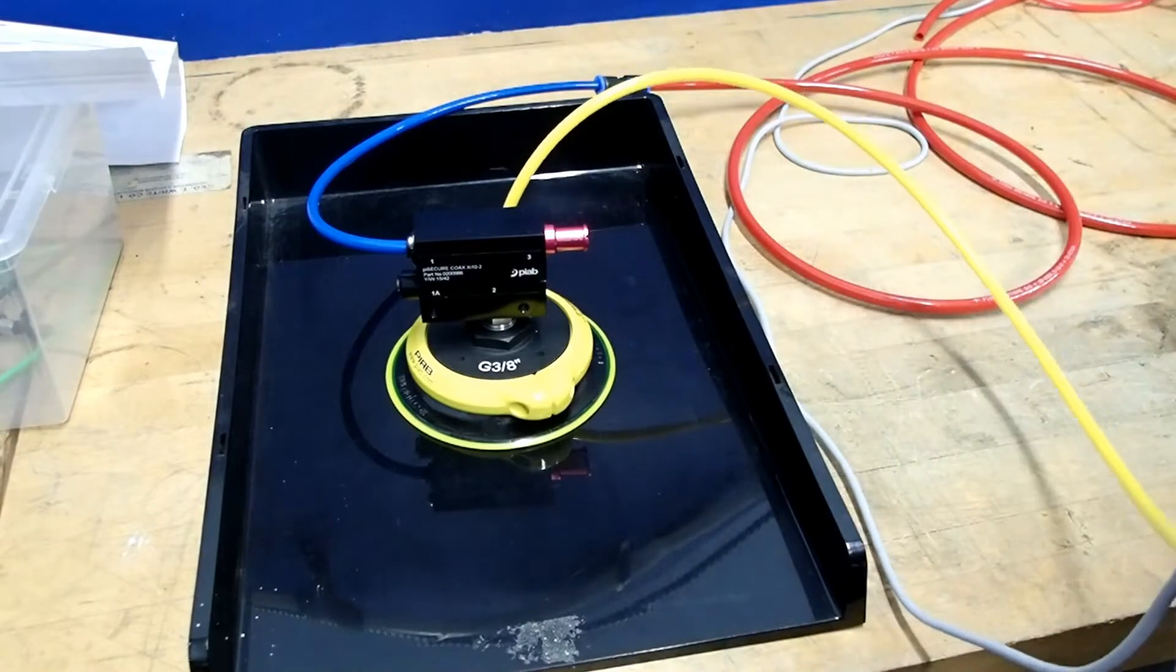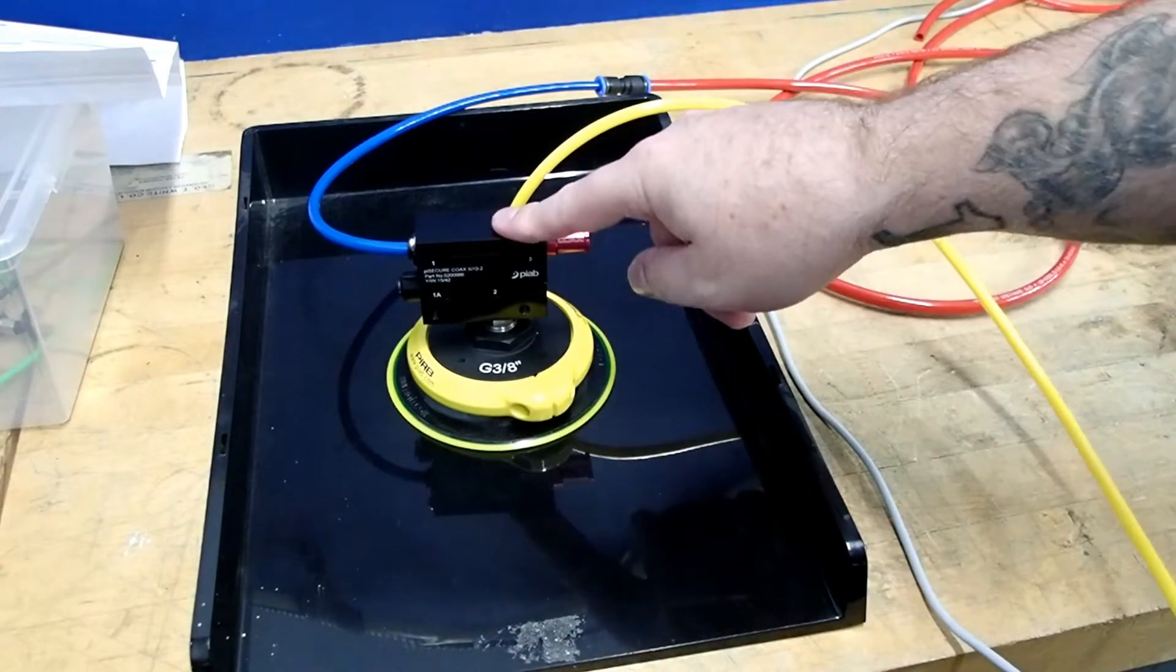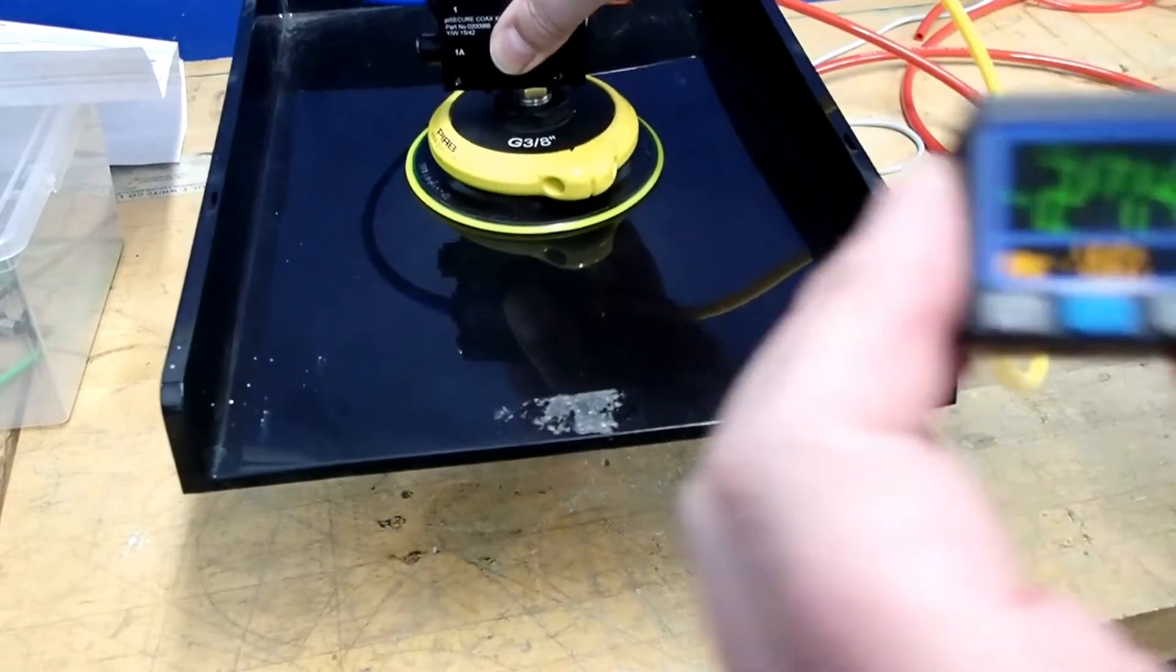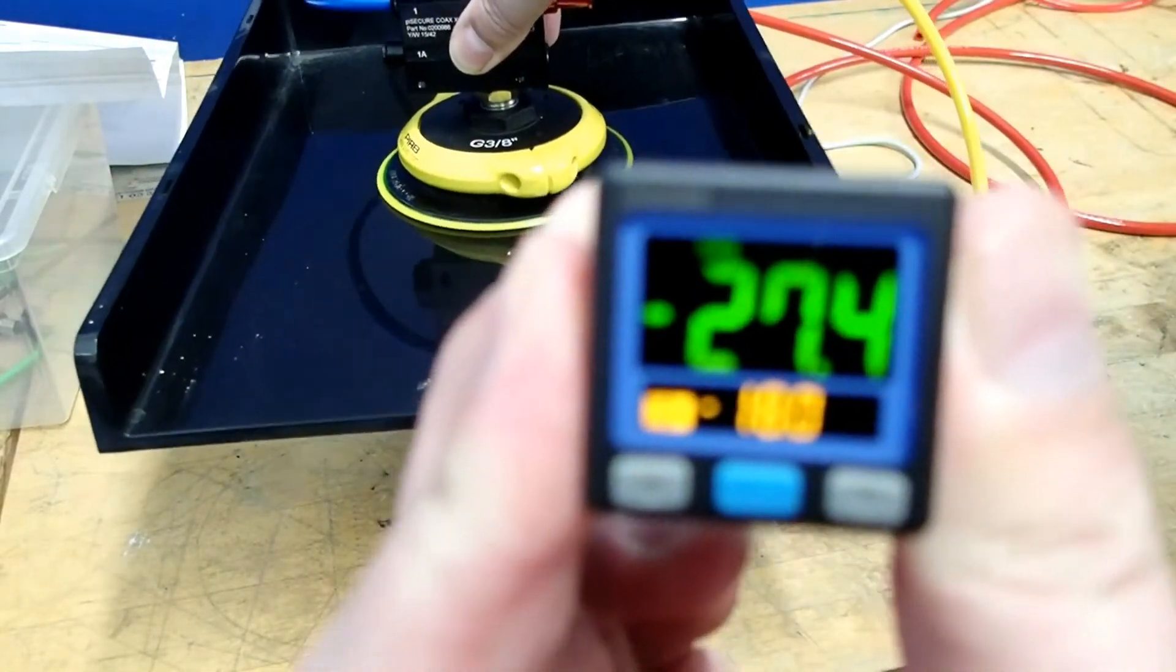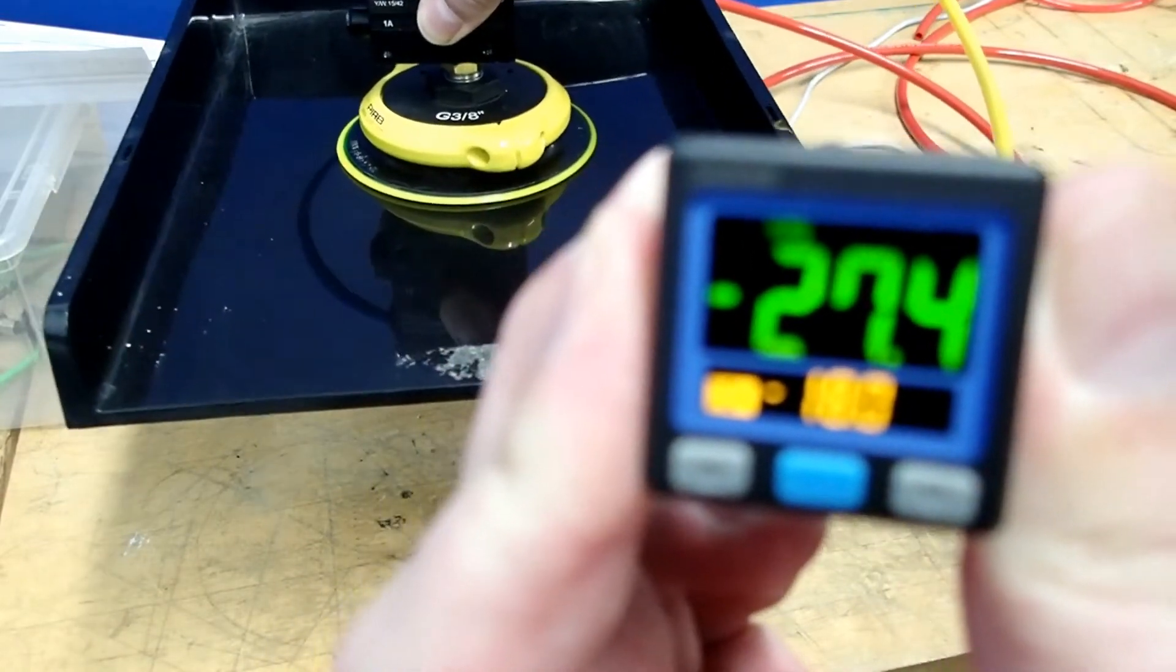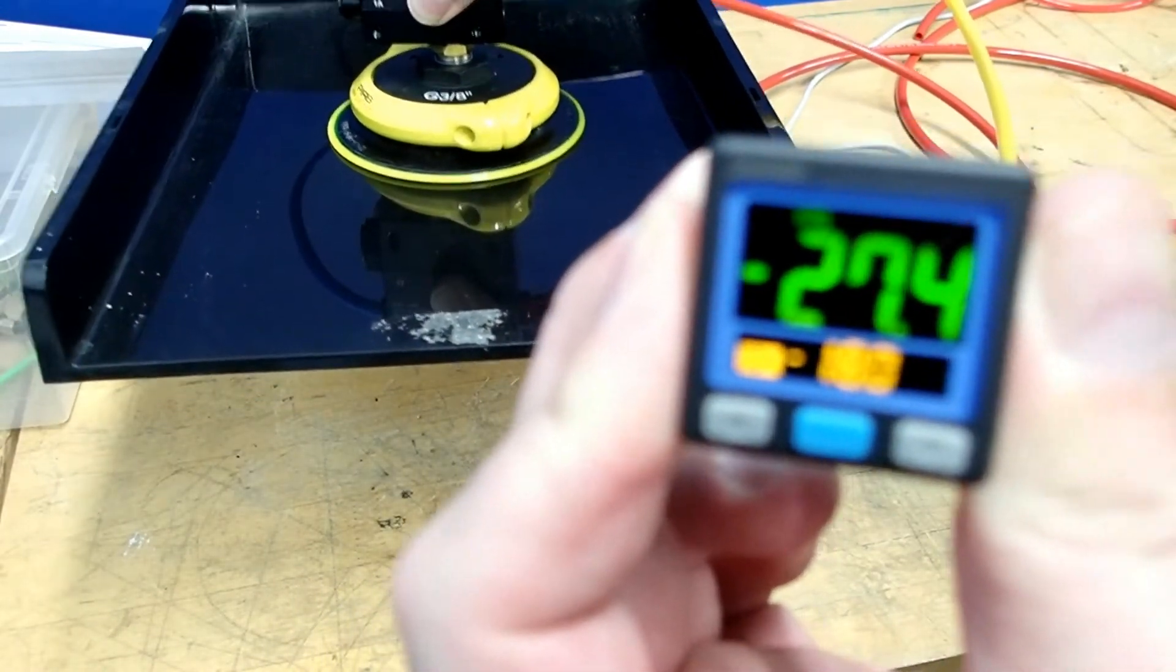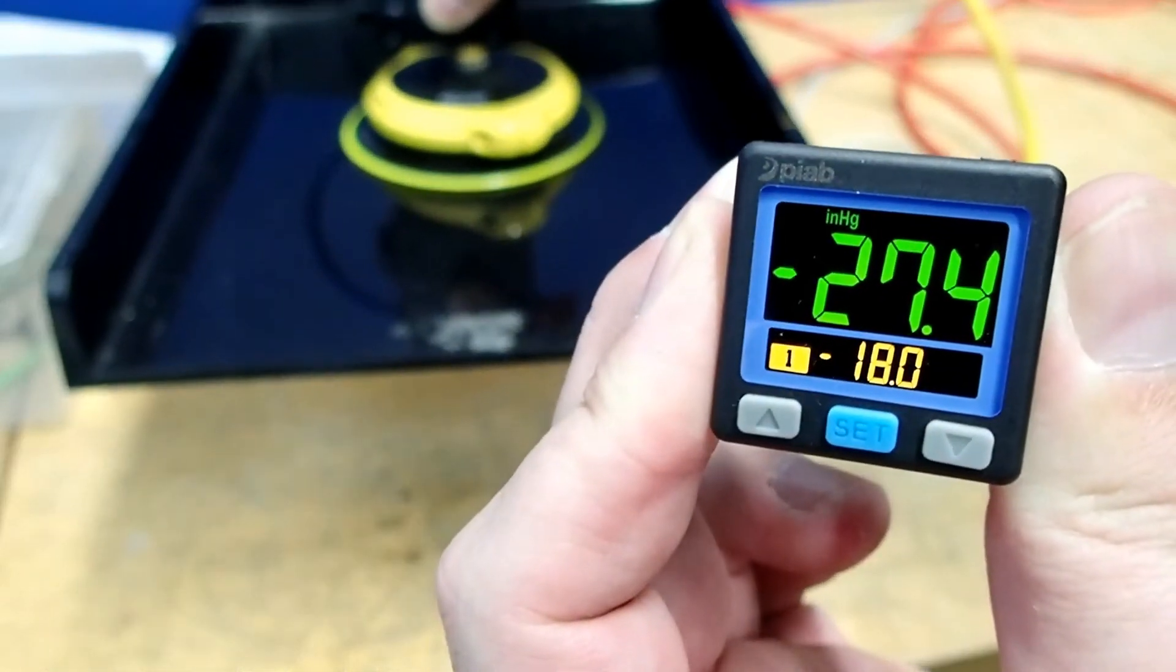And we're going to turn the air off, and you're going to hear the unit bleed off any excess air that's within it, and we're able to maintain. Let me get the gauge there for you. And we're able to maintain holding of the part in case of a power outage, air outage, or emergency stop.